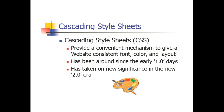Cascading style sheets provide a convenient mechanism to give a website consistent font, color, and layout. If anybody does any web design, they're probably very familiar with CSS. It's been around since Web 1.0 and has taken on new significance in the Web 2.0 era. This is going to allow us to provide that web app with a consistent user interface to our application.